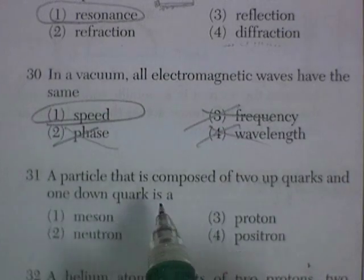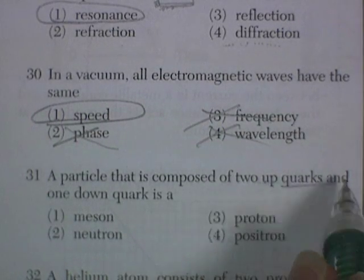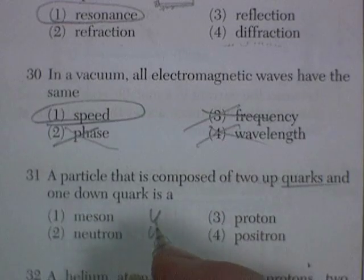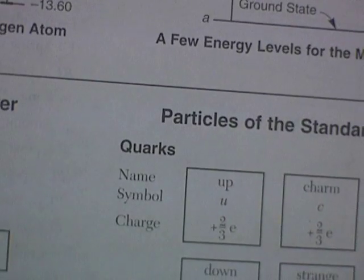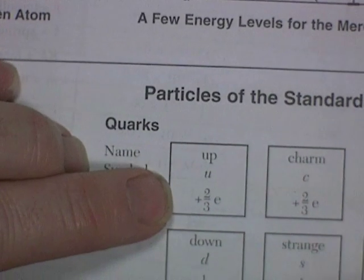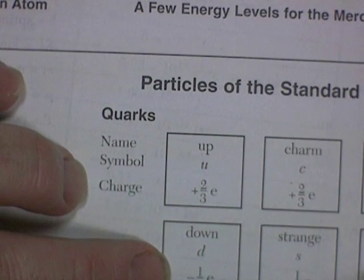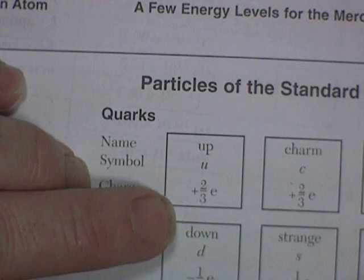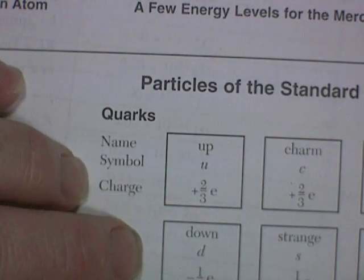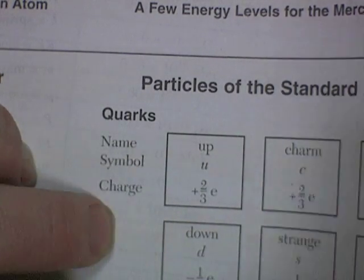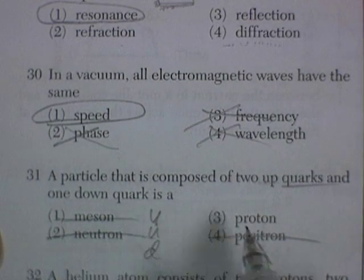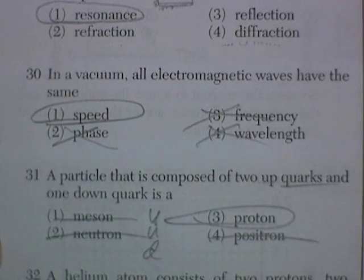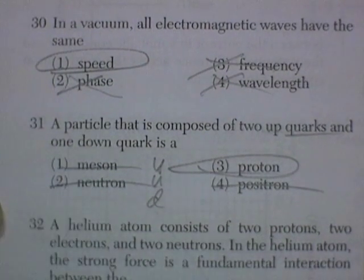31. A particle that is composed of two up quarks and a down quark. You're like, I'm supposed to remember this, but I can look it up. I do remember it, incidentally. Positive two-thirds, positive two-thirds, minus a third. So, that's four-thirds minus a third, so that's three-thirds or one. It would have a charge of one, and the particle that has a charge of one is the proton. Two ups and a down. Neutron is two downs and an up.